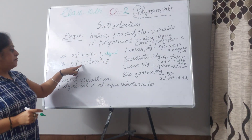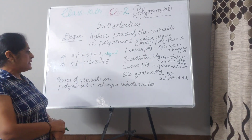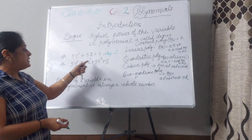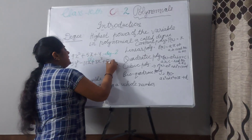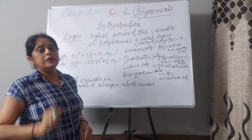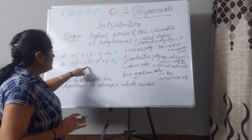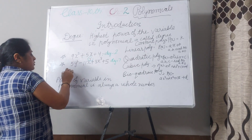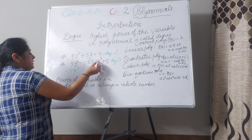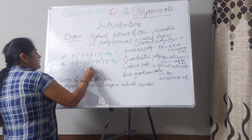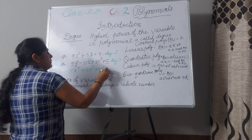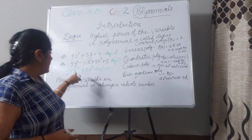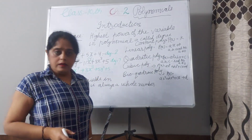Now check this: 5y² minus 11x⁷ plus 3x³ plus 5. If you check, the highest power of the variable is 7, so the degree is 7. Also keep in mind that we write polynomials in standard form — the highest power is written first. So: minus 11x⁷, then 3x³, then 5y², then 5. Powers are written in decreasing order.